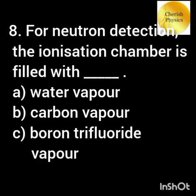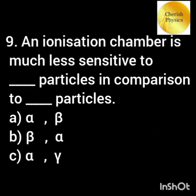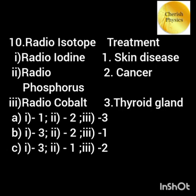For neutron detection, the ionization chamber is filled with BF₃ gas. An ionization chamber is much less sensitive to gamma particles in comparison to alpha and beta particles.